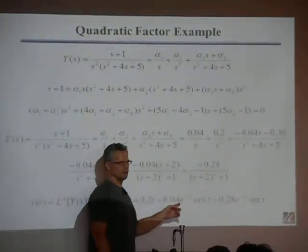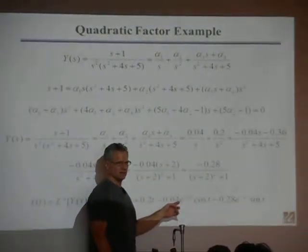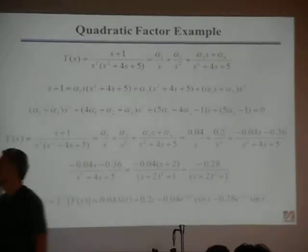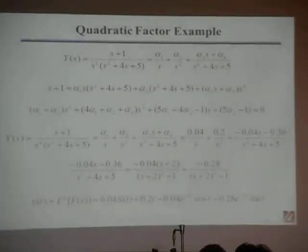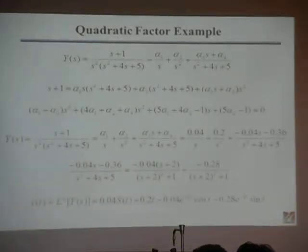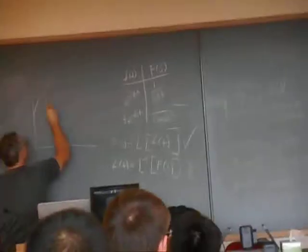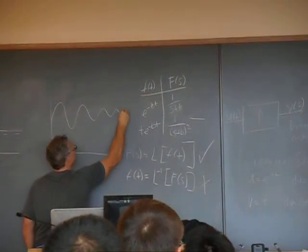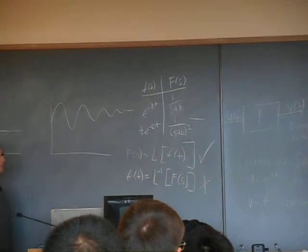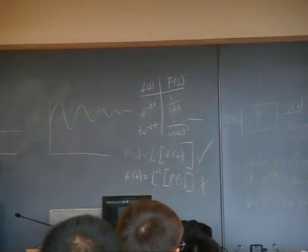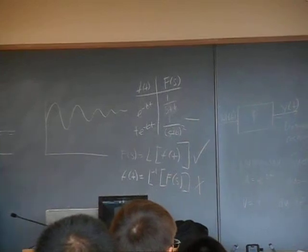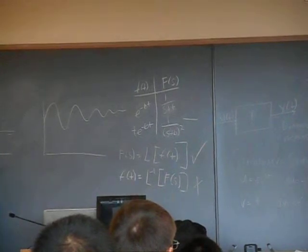So these terms oscillate and these terms decay because it's minus bt. I'm not drawing the whole solution, just drawing one of those exponentially weighted trig functions. Those kind of terms will look like they'll oscillate and the oscillations will decay out over time because the exponential will take over eventually.